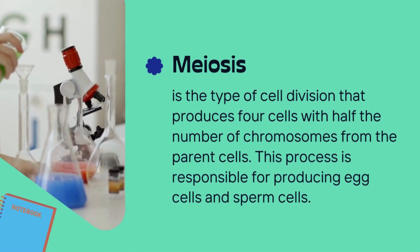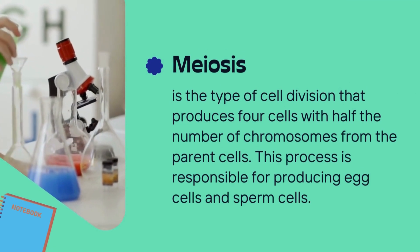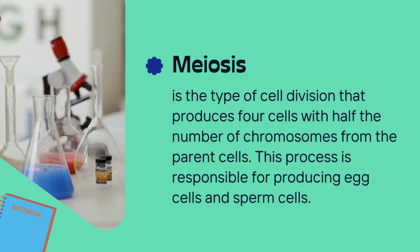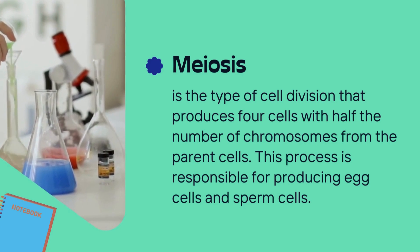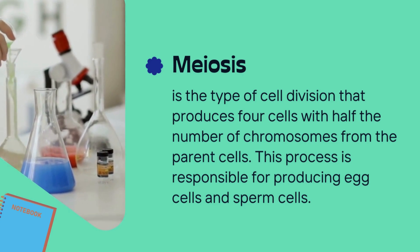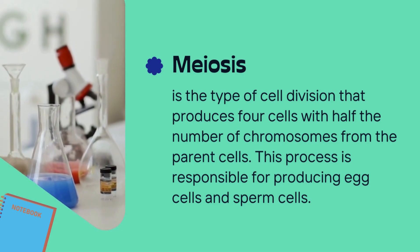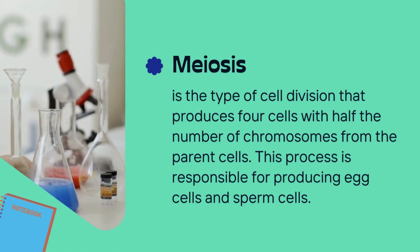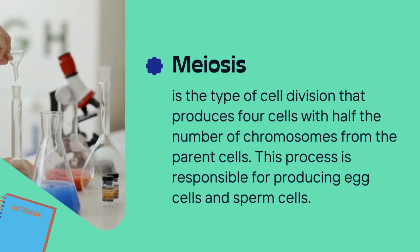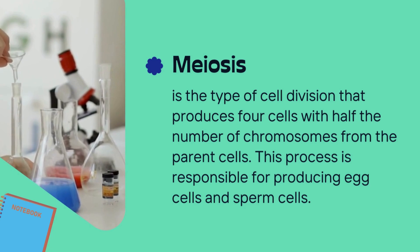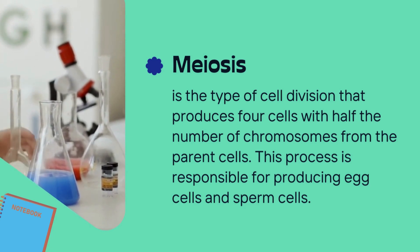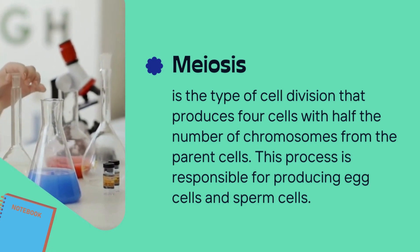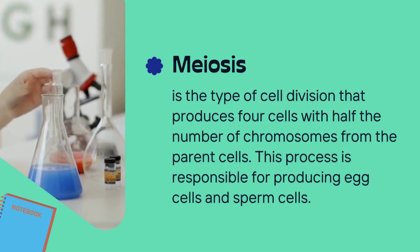Now I will tell you about meiosis. Meiosis is the type of cell division that produces four cells with half the number of chromosomes from the parent cells. This process is responsible for producing egg cells and sperm cells. Basically, meiosis occurs in our reproductive organs, in the egg cells and sperm cells.